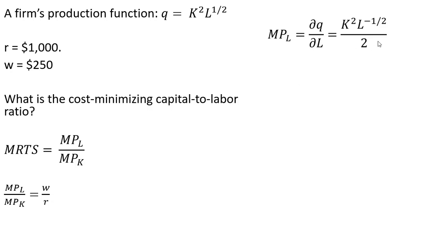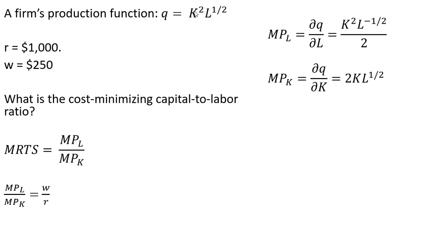The marginal product of labor in this example is given by this expression. And the marginal product of capital: we bring the 2 down in front — that's where this 2 is coming from — and then 2 minus 1 on the exponent on K just leaves us with K raised to the power of 1.